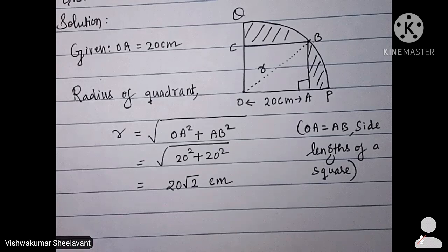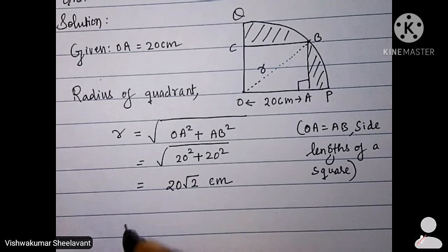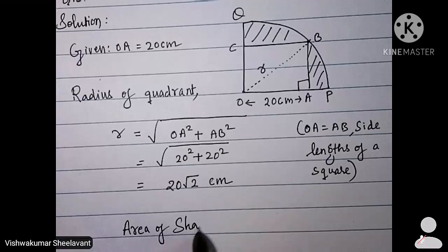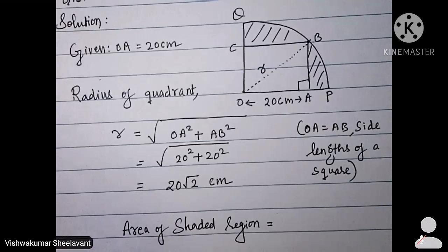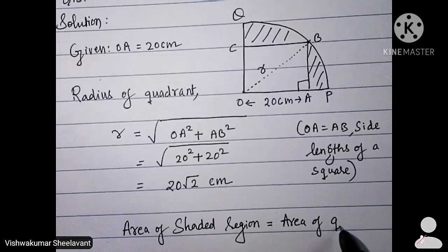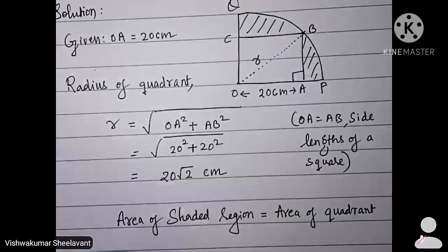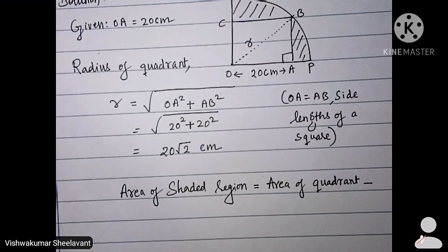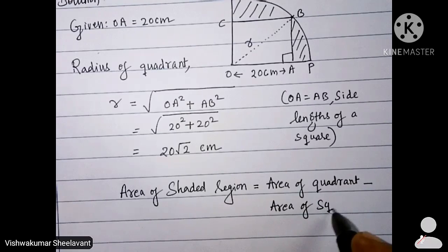So how do you find area of shaded region now? Area of shaded region is equal to area of quadrant minus area of square.